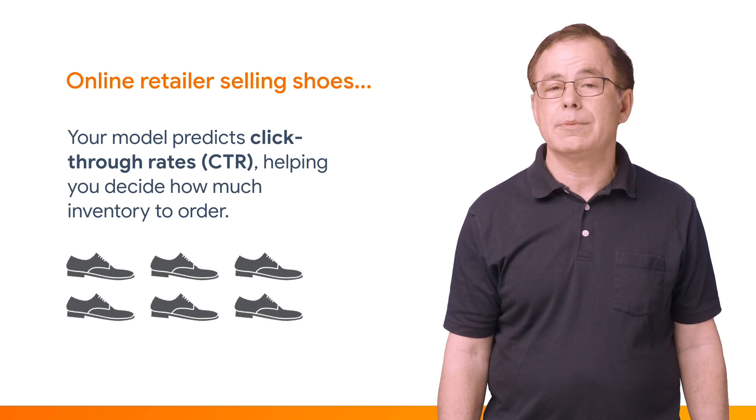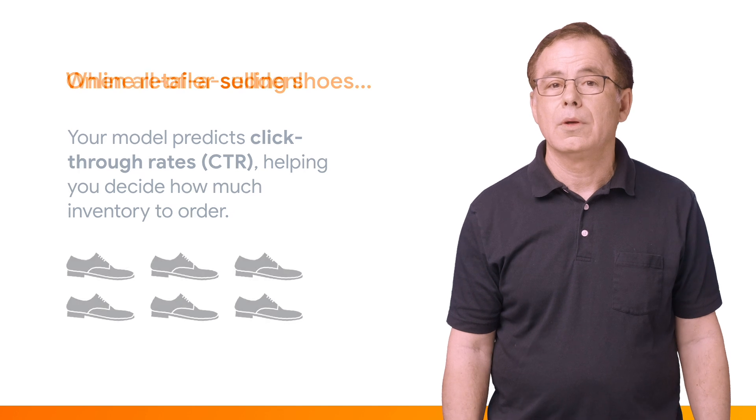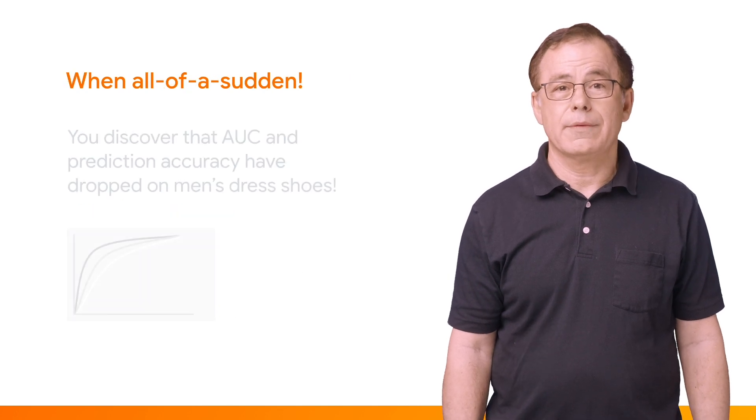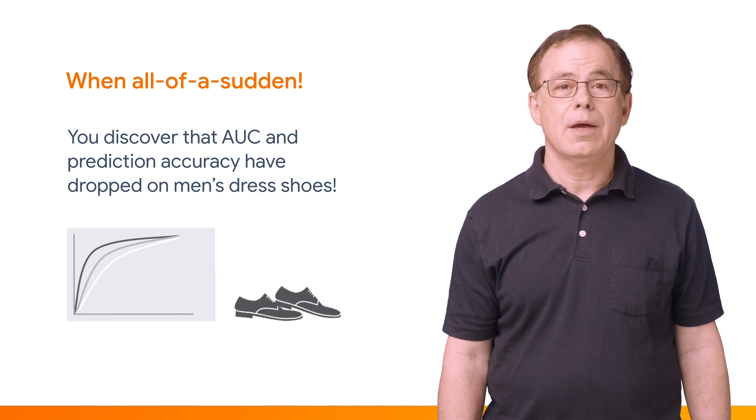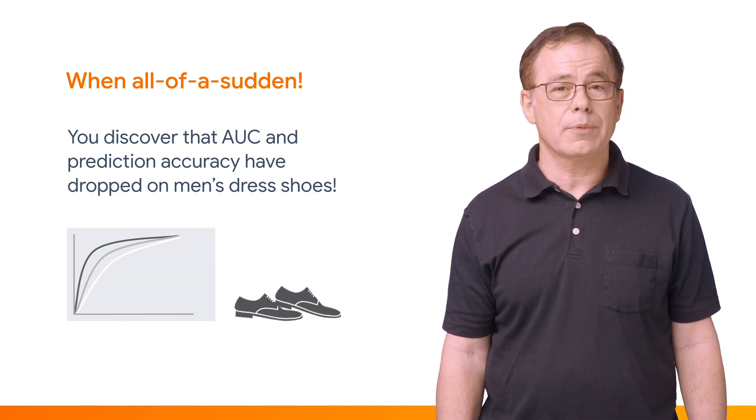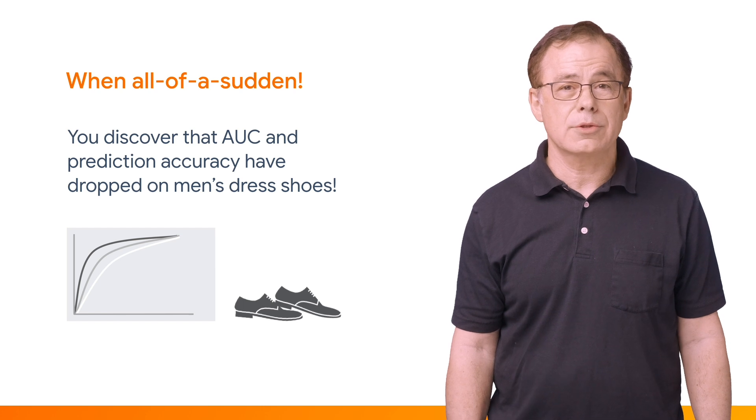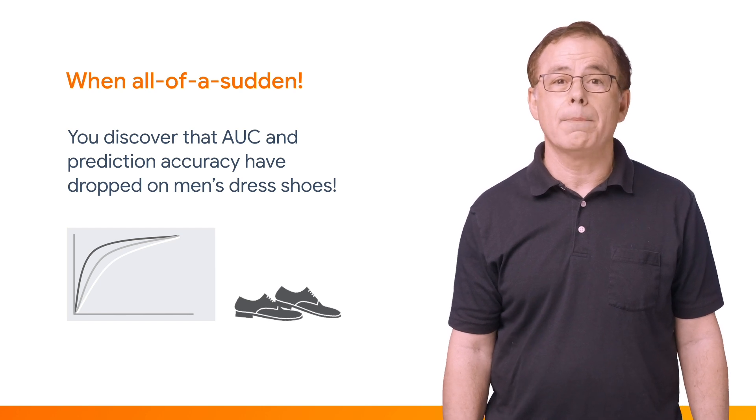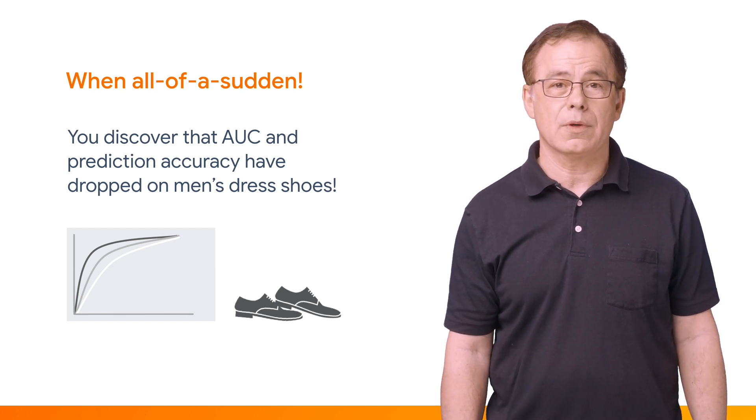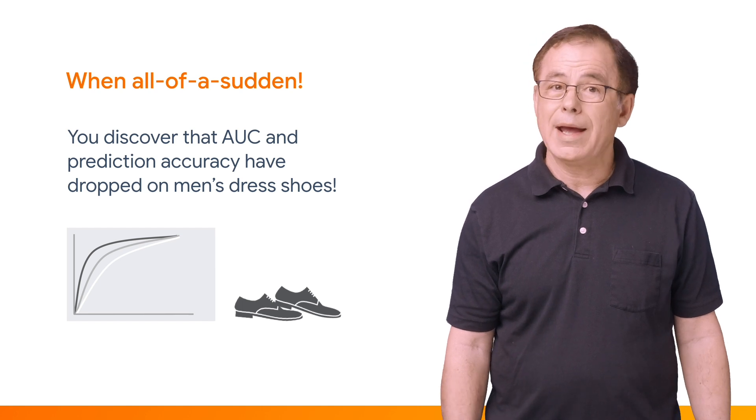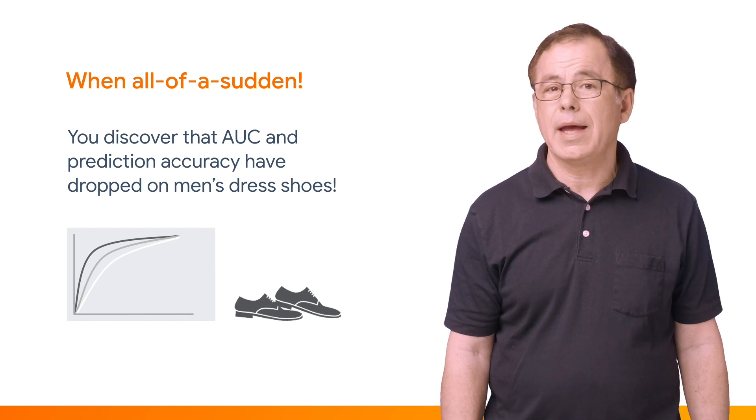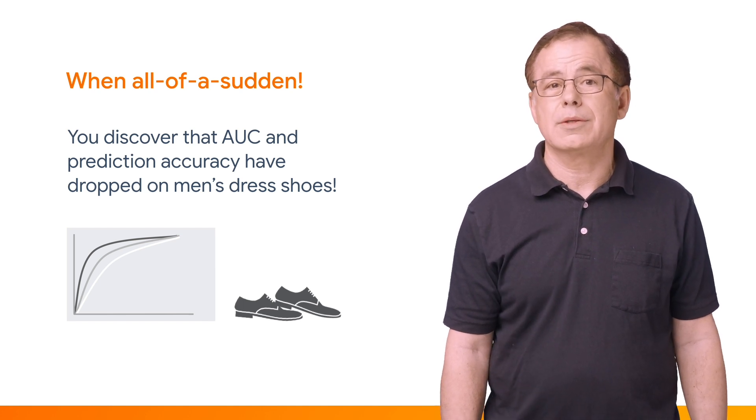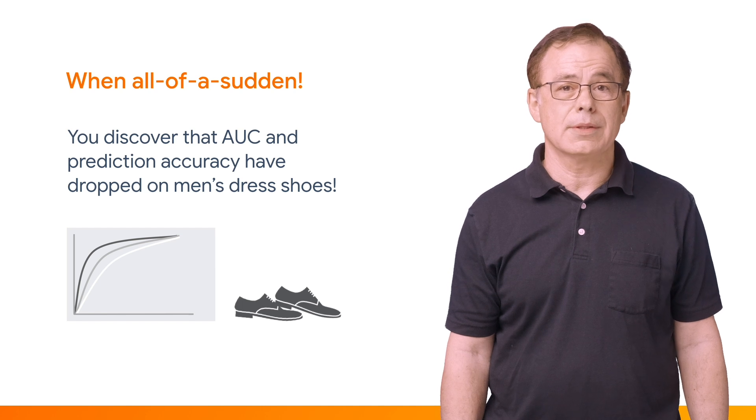Everything seems to be working great. When suddenly, they discover that their model's AUC and prediction accuracy for a particular part of their product line, men's dress shoes, has started getting much worse than it was before. Now, how much inventory should they order for men's dress shoes? If these are high-end dress shoes, the cost could be a significant part of their business.